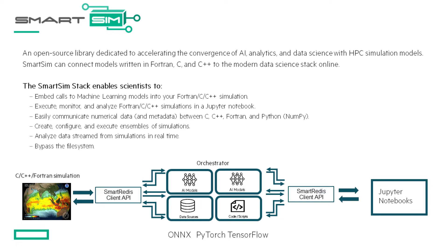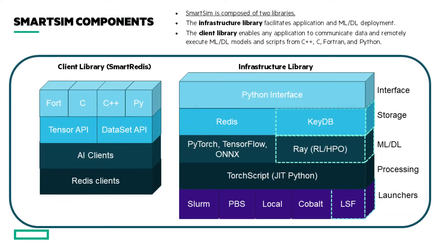SmartSim is split into two libraries. One is the SmartRedis clients, which get embedded into your application. The core client is written in C++, with wrappers in Fortran, C, and Python, providing coherent APIs across all these languages. The second library is the infrastructure library — sometimes just called SmartSim — which allows users to launch and manage complex machine learning and scientific application workflows.